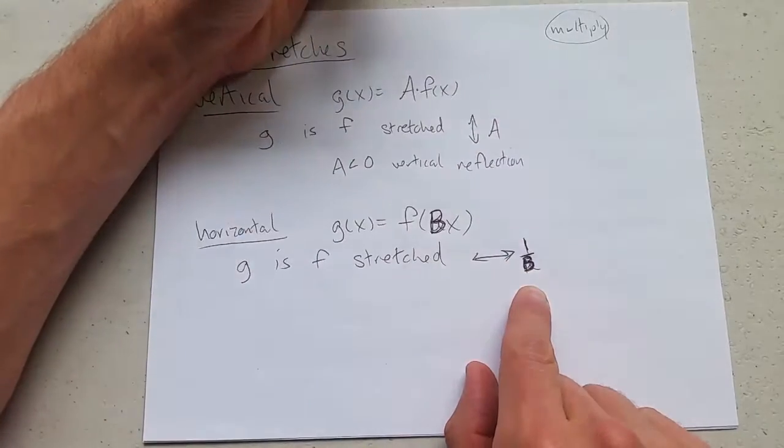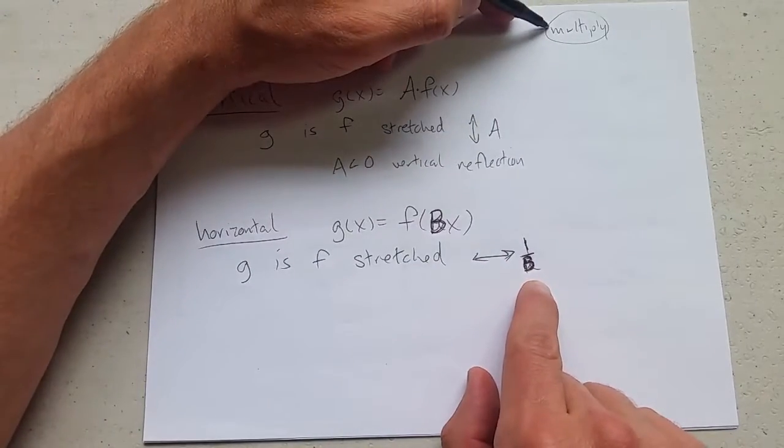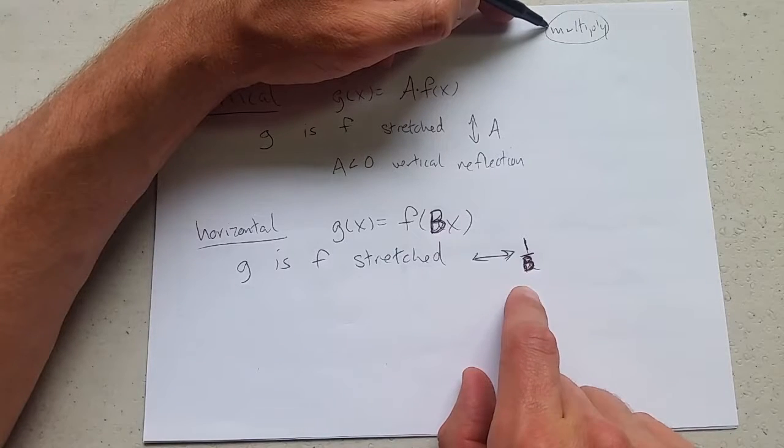It is a multiplication of all your x-coordinates by 1 over b. So you're going to multiply your x-coordinates by 1 over b.